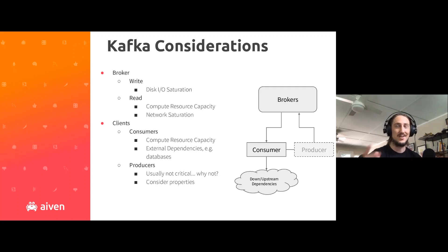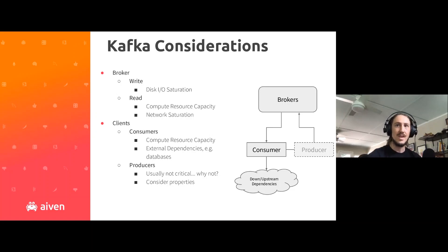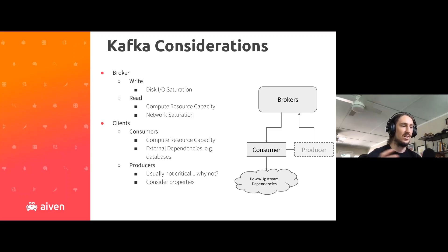Producers — I call out usually not critical, because often in streaming architectures the consumer pulls a message, does something to it: enrichment, some sort of processing, dumps it into a database, and then publishes it back to Kafka. So producers will usually also be tested just by testing consumers. But if anyone's interested, there are specific properties to look at — for example, 'acks=all' to make sure messages get written and flushed appropriately, or async producers. Most commonly you'll be load testing producers just by load testing consumers.